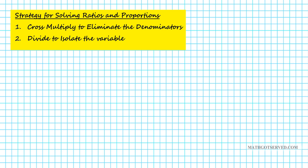Before we get started looking at some examples, let's go over the strategy for solving ratios and proportions. First of all, what you're going to do is cross multiply to eliminate the denominators of your two ratios. Then, you're going to divide by the coefficient of the variable in order to isolate the variable.